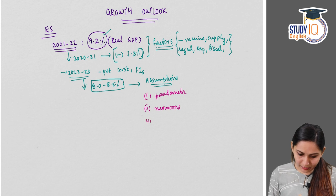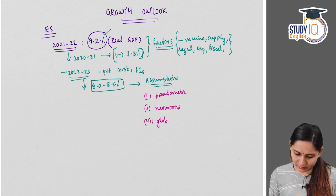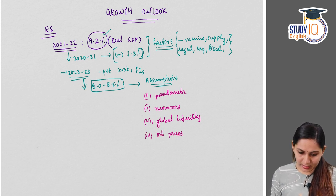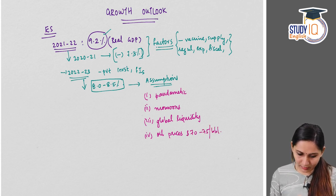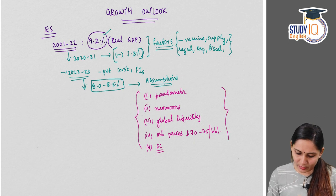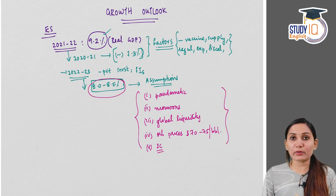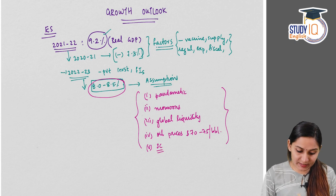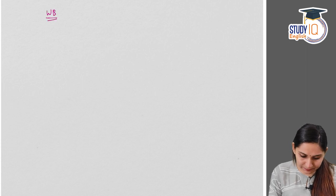Further assumptions underlying the 8 to 8.5% growth projection include: oil prices remaining moderate within the range of $70 to $75 per barrel, and global supply chain issues easing. These are the assumptions or premises based on which the survey has made a growth projection of 8 to 8.5% for the next financial year 2022-23, while for the ongoing financial year it expects real GDP growth of 9.2%.